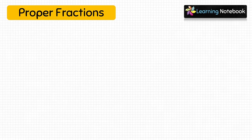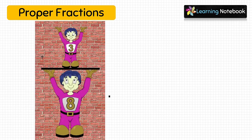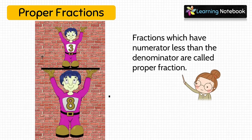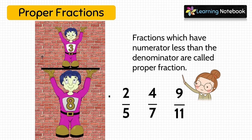Let's first understand proper fractions. Look at this figure — it is proper for the large person to hold up the small person. In the same way, 3 by 8 is a proper fraction because it is proper for the large number to hold up the small number. Fractions which have numerator less than the denominator are called proper fractions. For example, 2 by 5, 4 by 7, and 9 by 11 are all proper fractions because their numerator is less than their denominator.